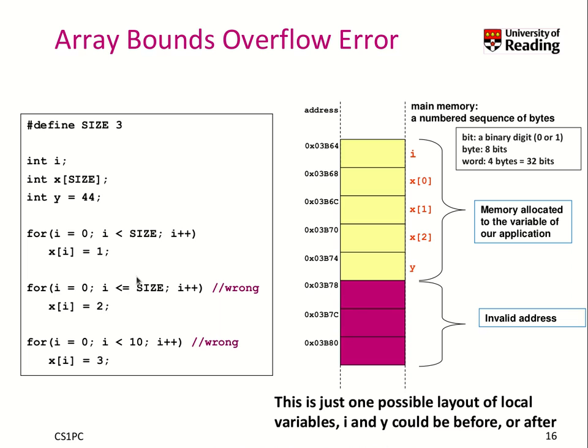And similarly, you can have here some code i smaller than 10. So we tried to override it with the values 3. So we go from 0 up to here, which is our valid array. Then we would override y again with 3. But then we write some kind of invalid address. And that may cause then a segmentation fault.